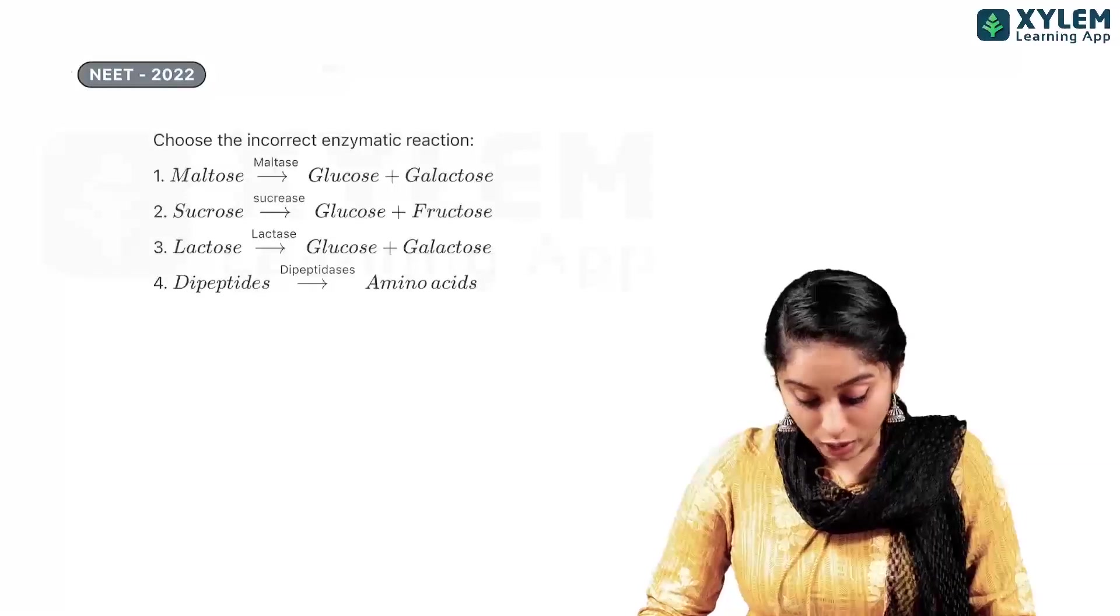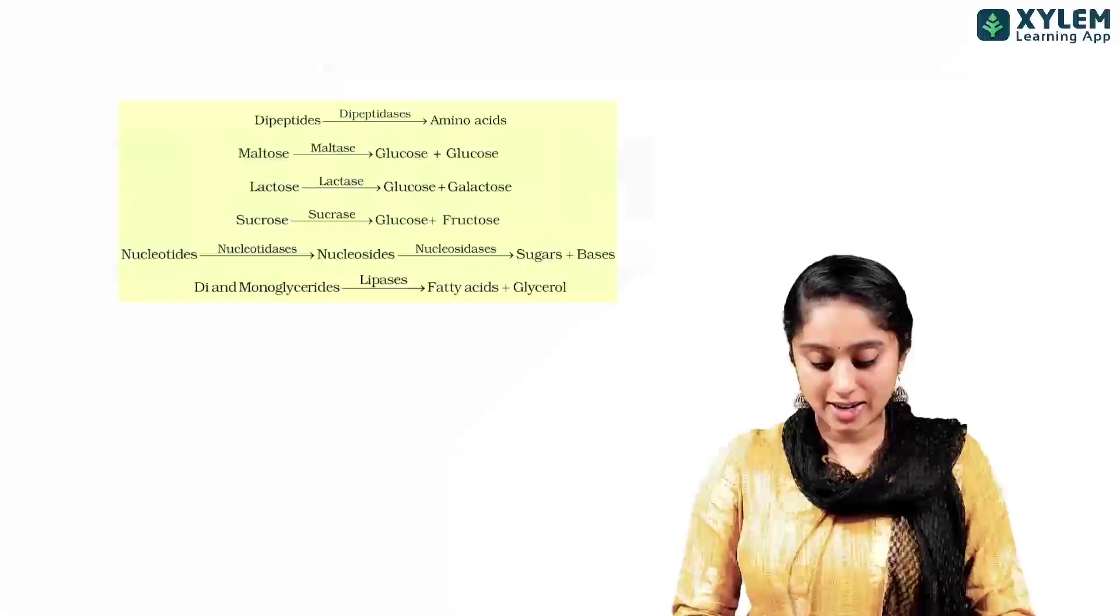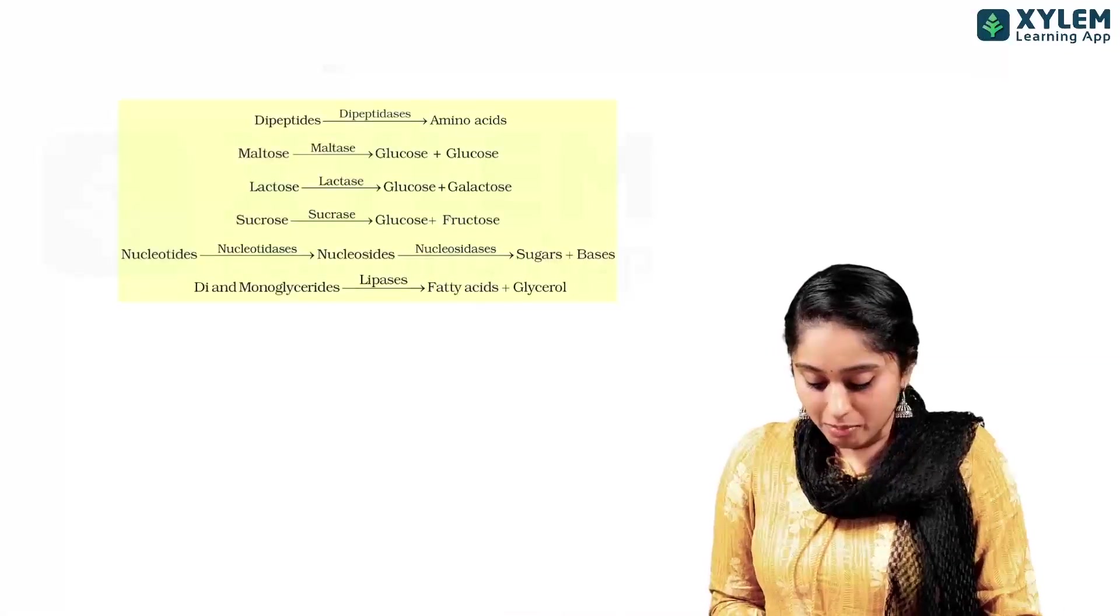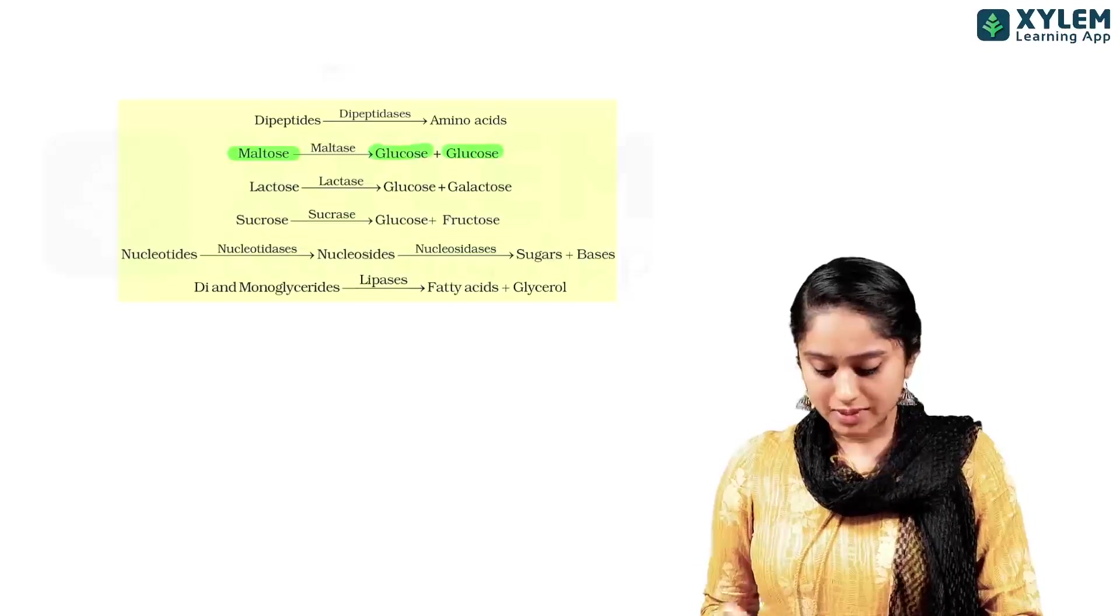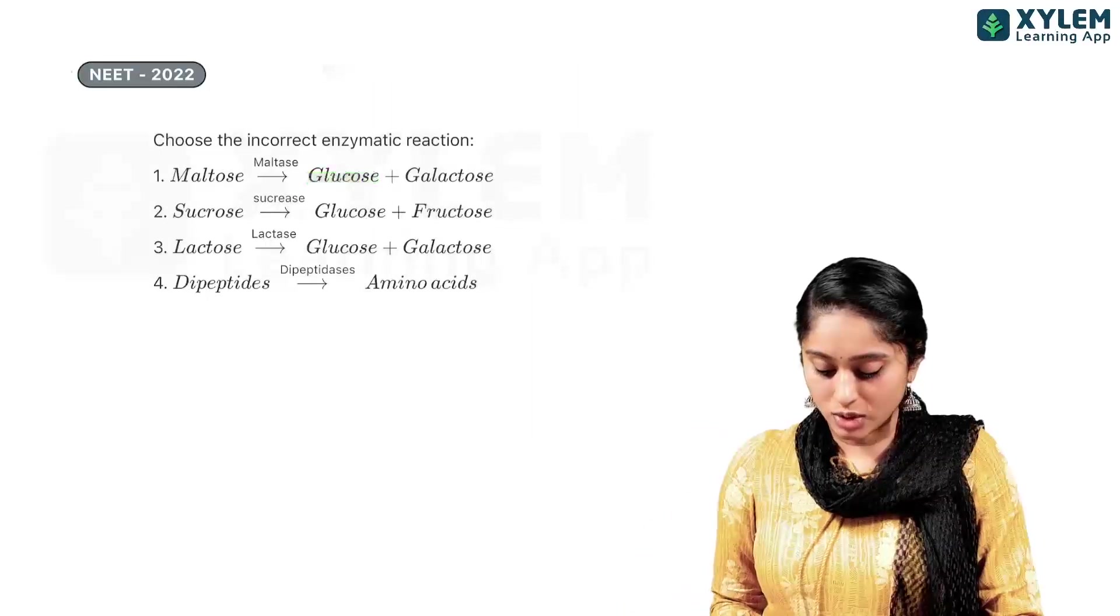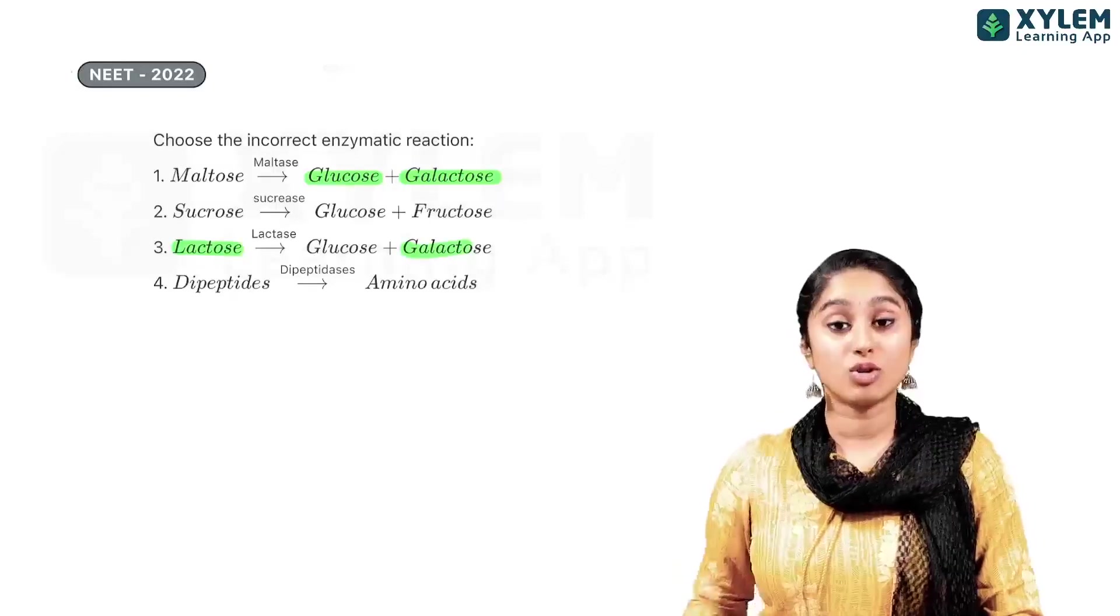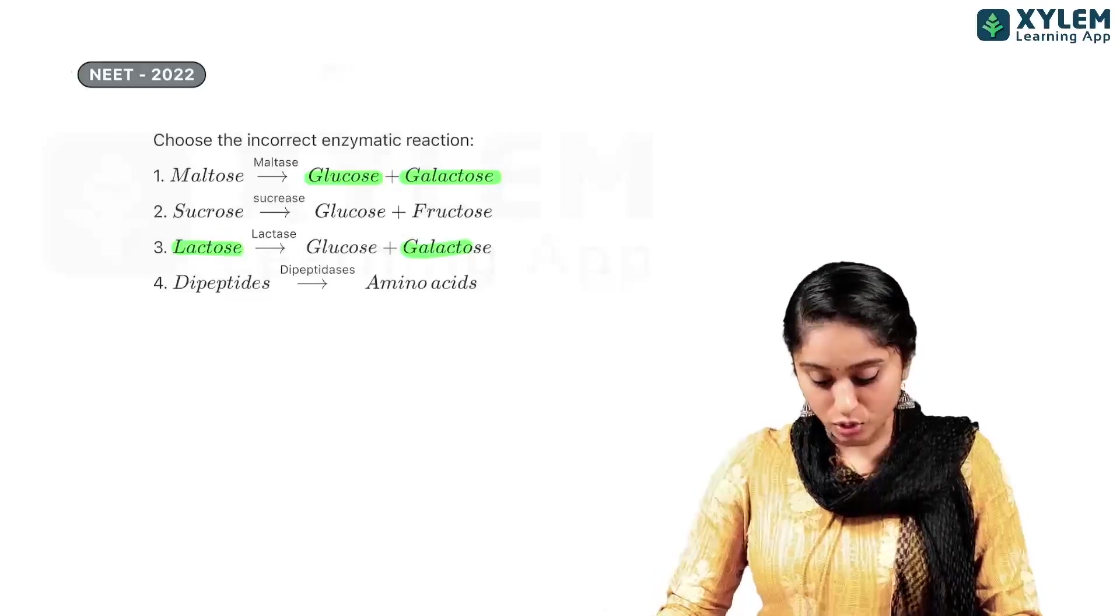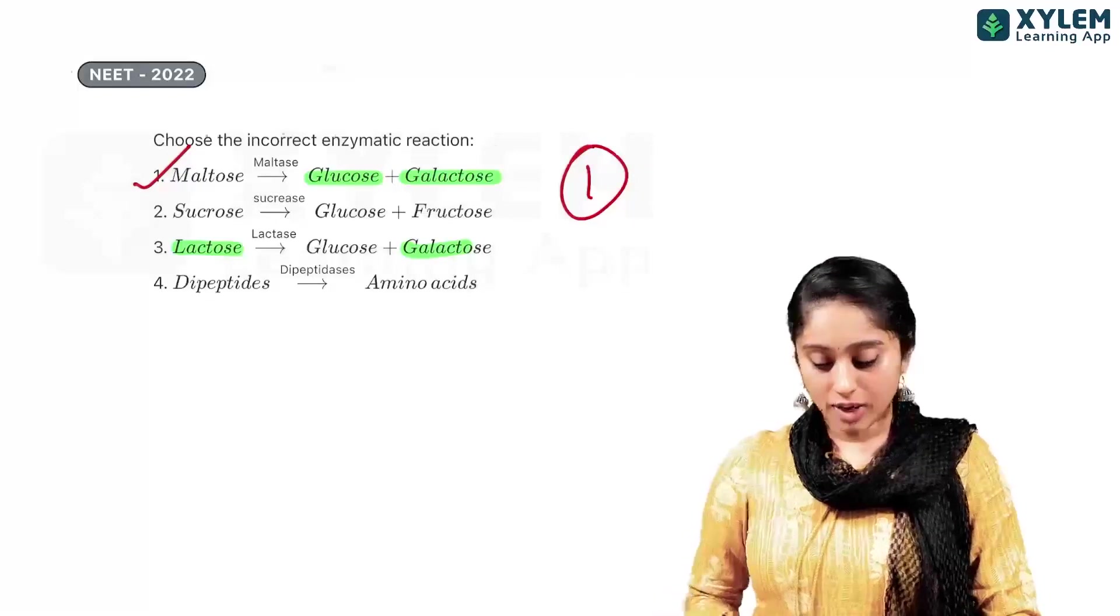Okay. Now, this question came in 2022. It is a reaction based question. So, in NCERT, all the reactions are given in yellow color. They are directly asking. So, if you look at this, maltose is breaking into glucose plus glucose in the presence of maltase. But here, in the first option, it is given as glucose and galactose. Here, if you see, lactose is the one that breaks into galactose. Maltose is broken down into two molecules of glucose, which is the incorrect enzyme. Clearly, option number 1.